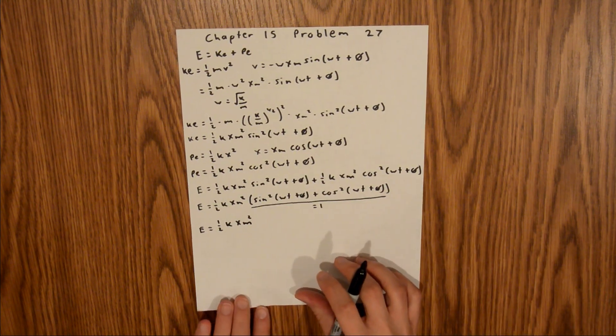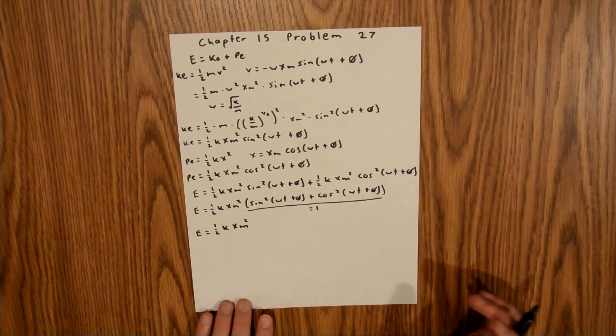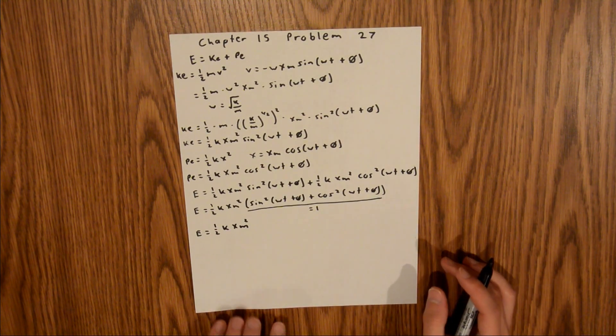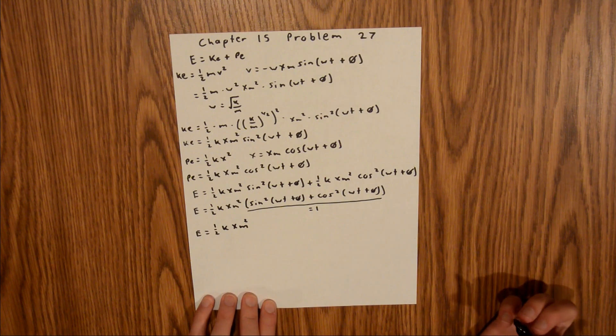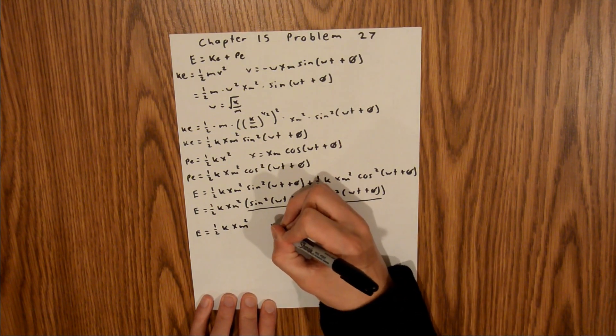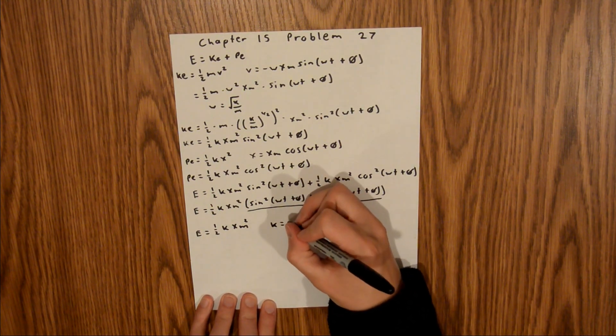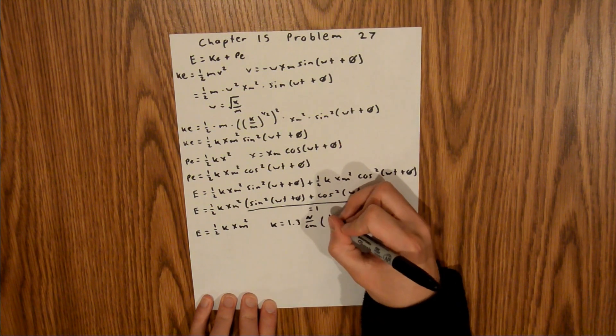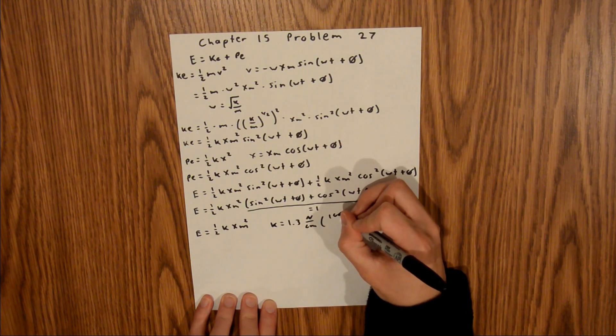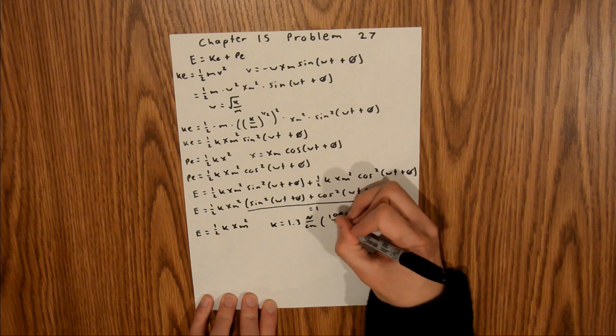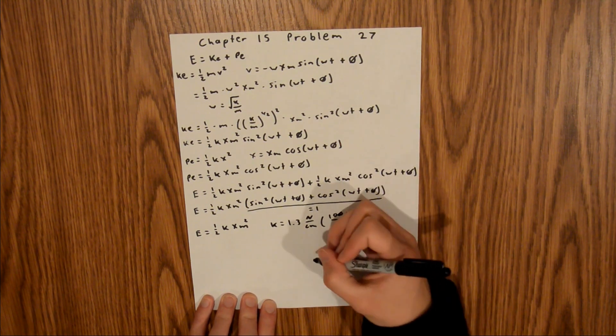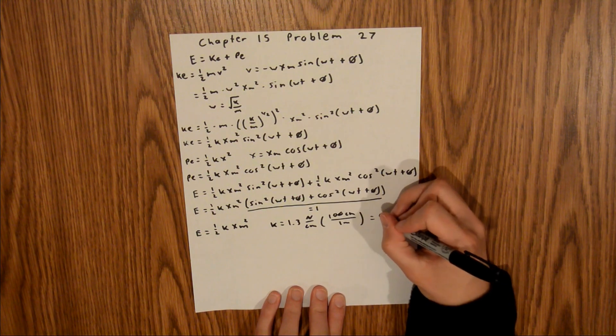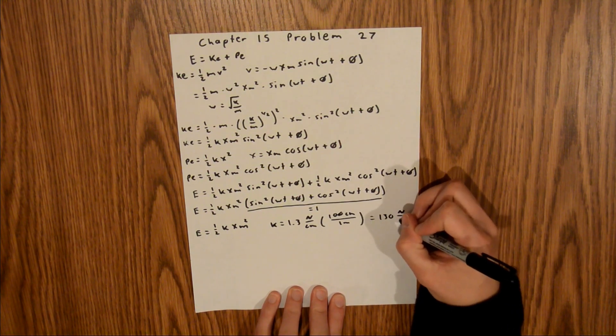And so we're actually given all those values in the problem, but they're all given in centimeters, and we're going to want those in meters. So we need to do a little bit of unit conversion. And so k is equal to 1.3 newtons per centimeter, and we know that there are 100 centimeters in one meter. And so that is going to be equal to 130 newtons per meter.